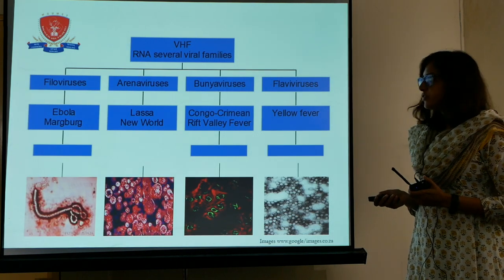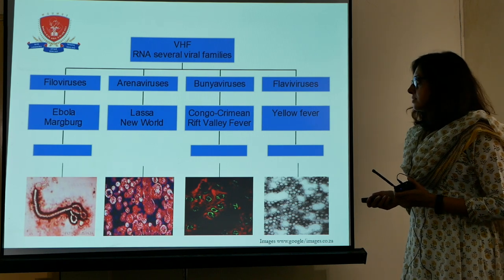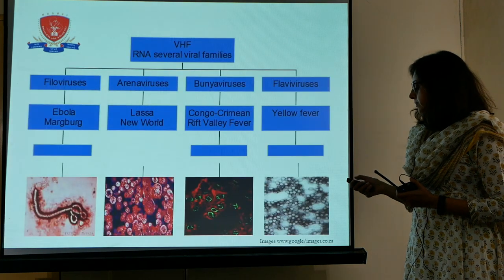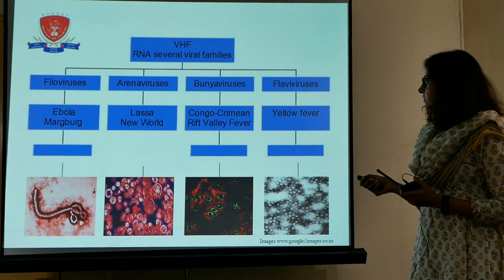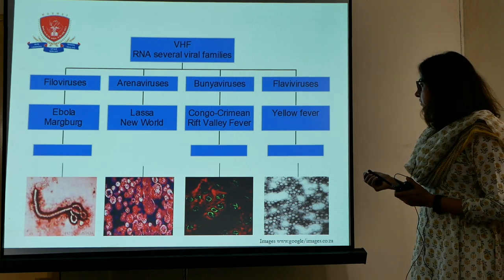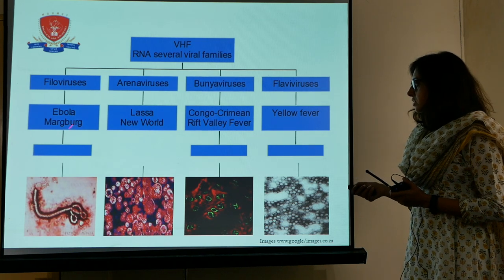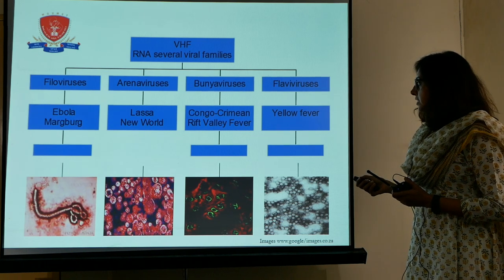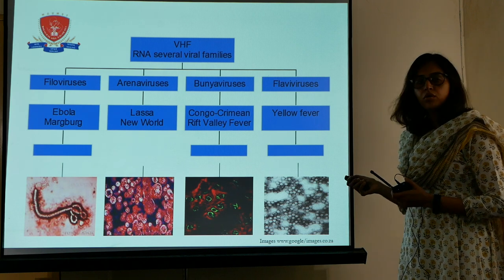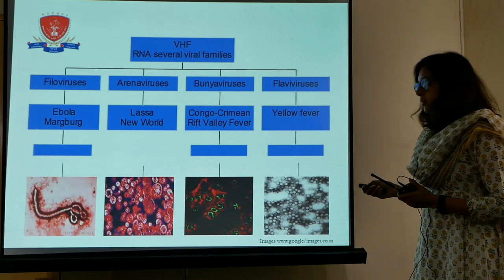This line diagram shows the viral hemorrhagic fevers. These are RNA viruses which consist of filoviruses, arenaviruses, bunyaviruses, and flaviviruses. We are interested in yellow fever, which is not yet present in India. Filoviruses contain Ebola and Marburg; arenaviruses contain Lassa virus; bunyaviruses include Rift Valley fever and Crimean-Congo fever; and flaviviruses contain dengue fever.